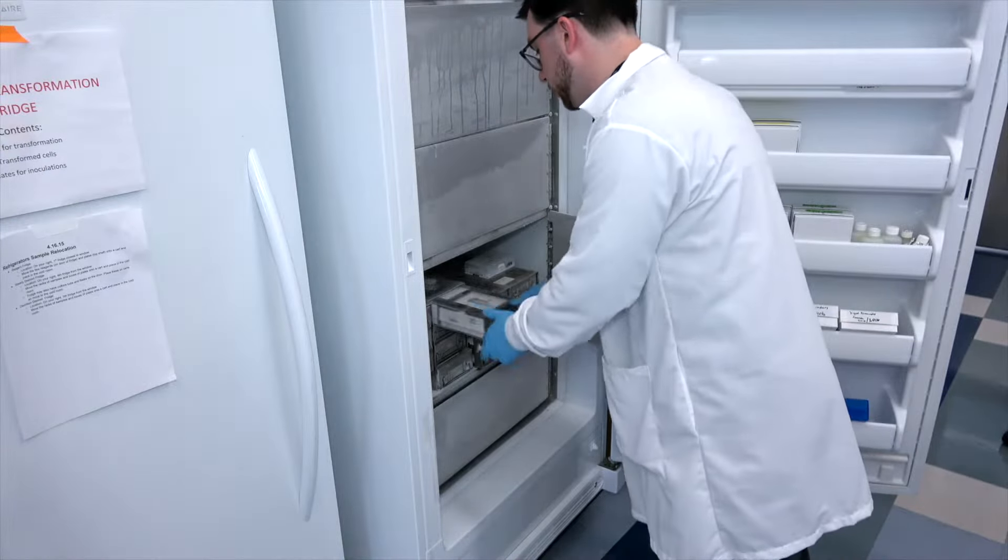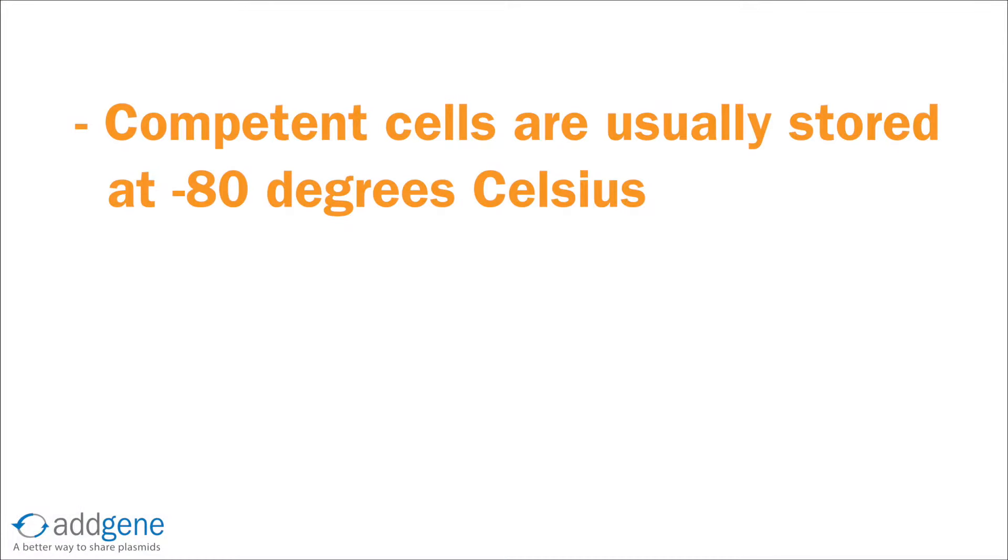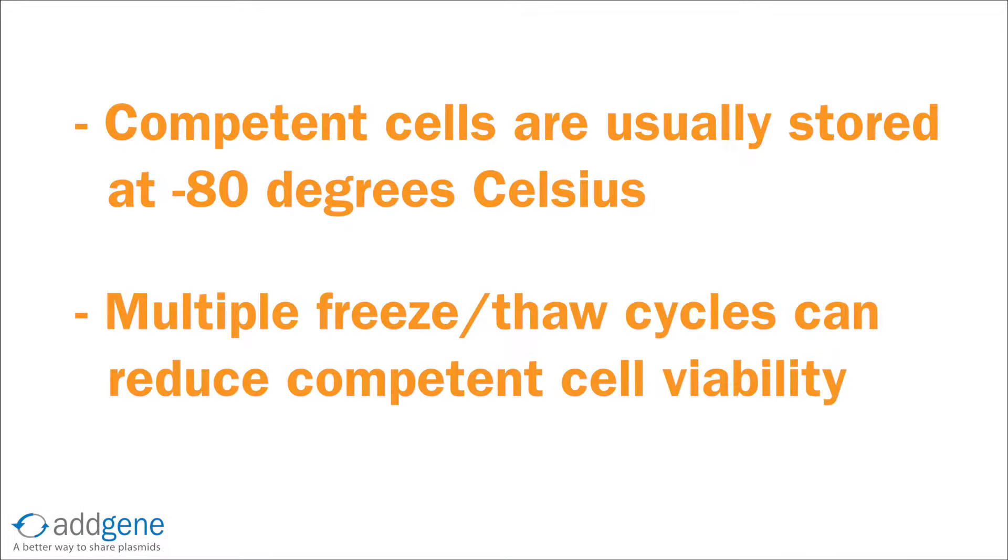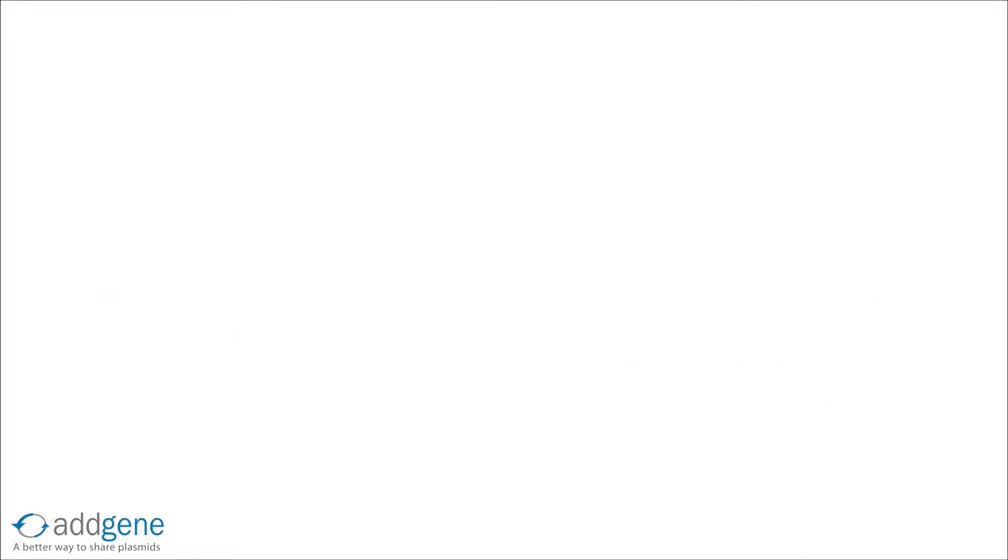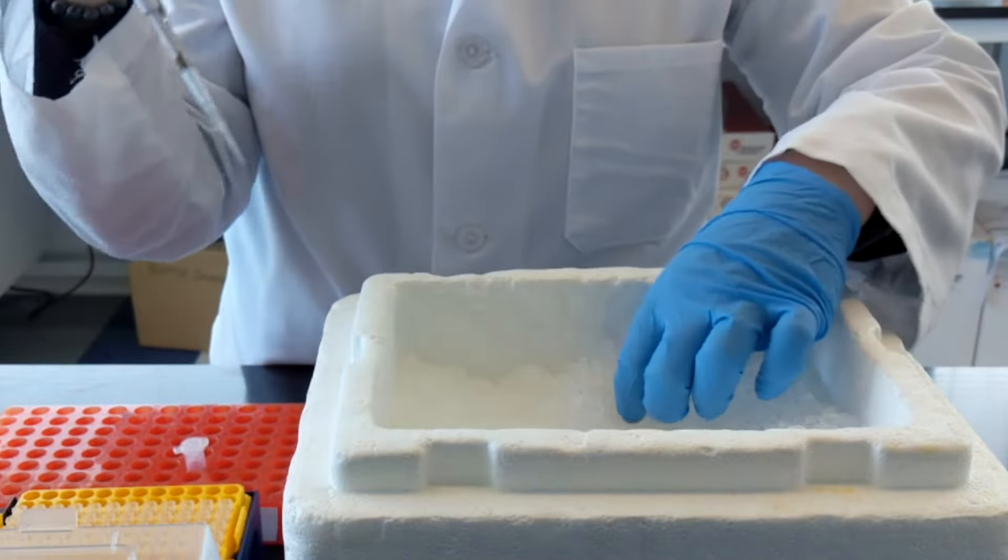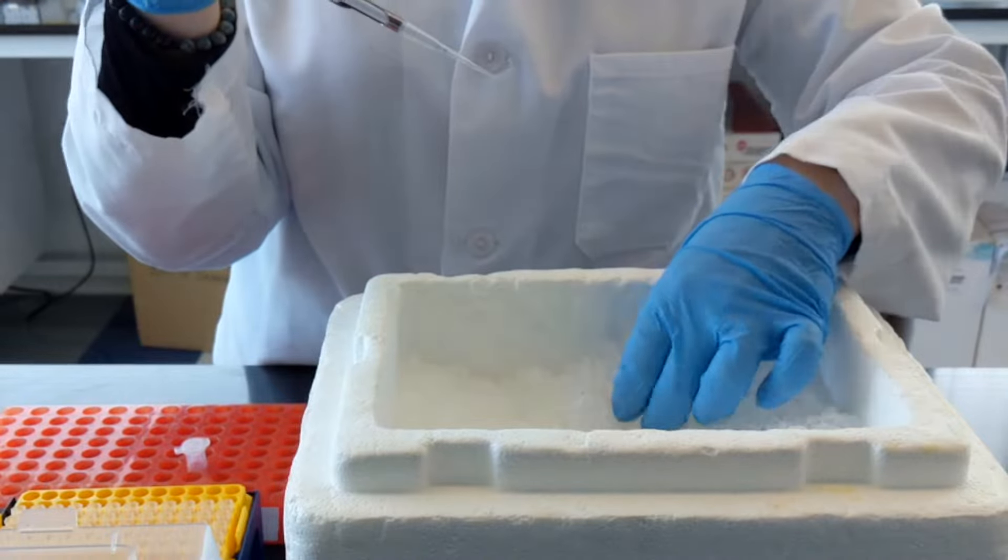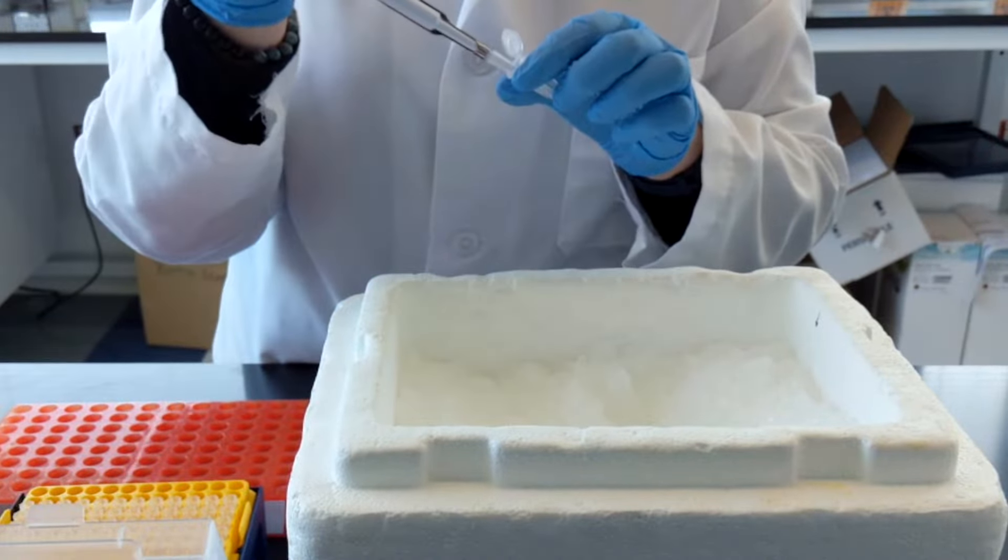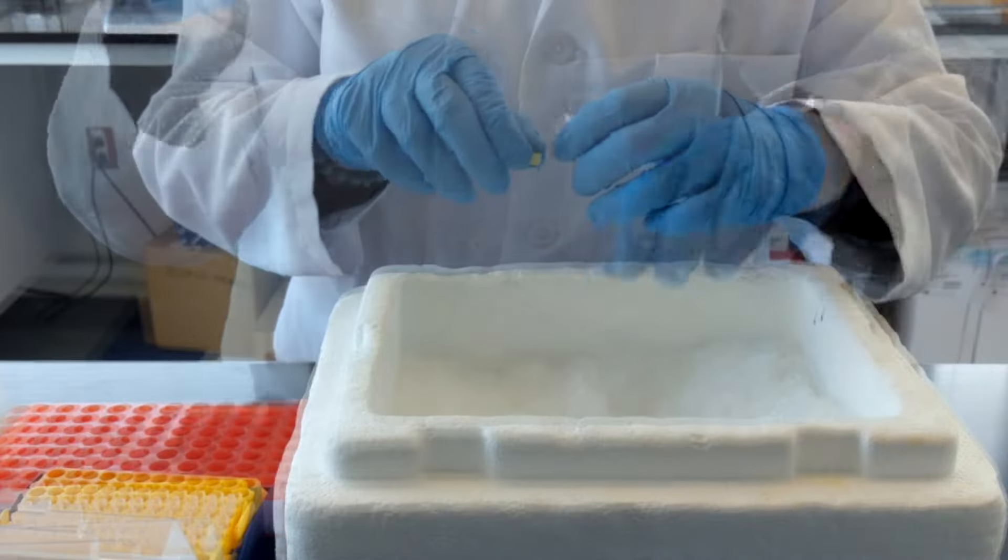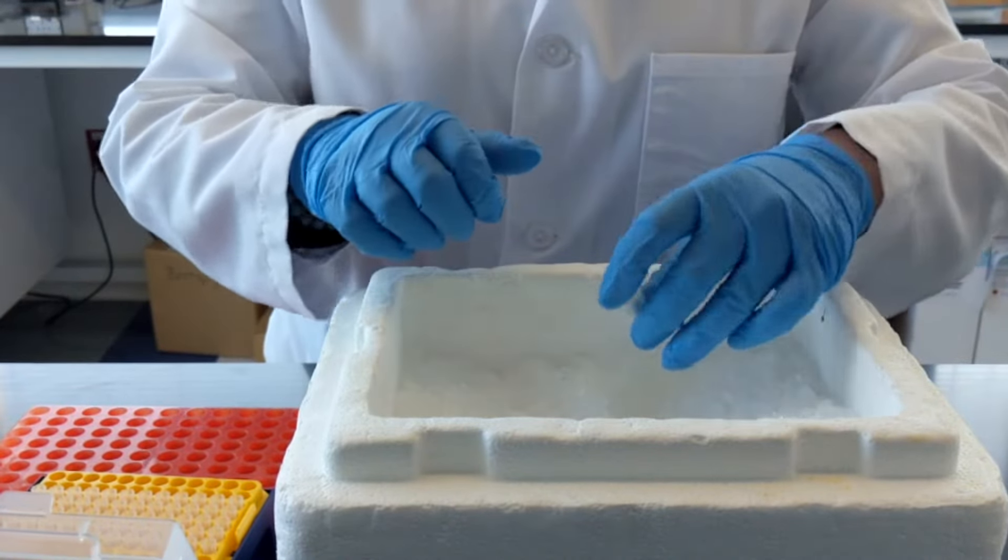Once acquired, competent cells are usually stored at negative 80 degrees Celsius. Multiple freeze-thaw cycles can reduce competent cell viability. To limit competent cell exposure to multiple freeze-thaw cycles, you should aliquot your cells into small volumes prior to storage and only thaw the amount required for your experiment directly prior to performing your transformation.